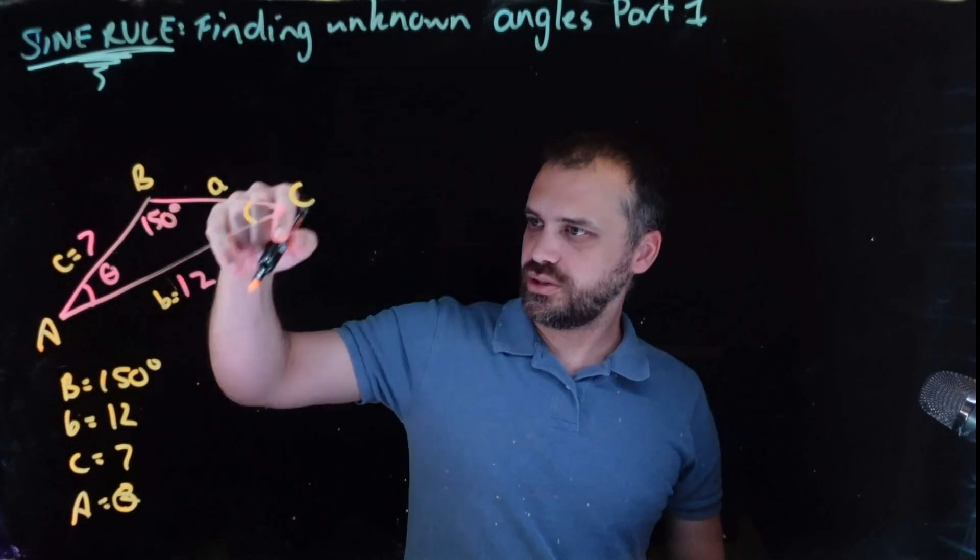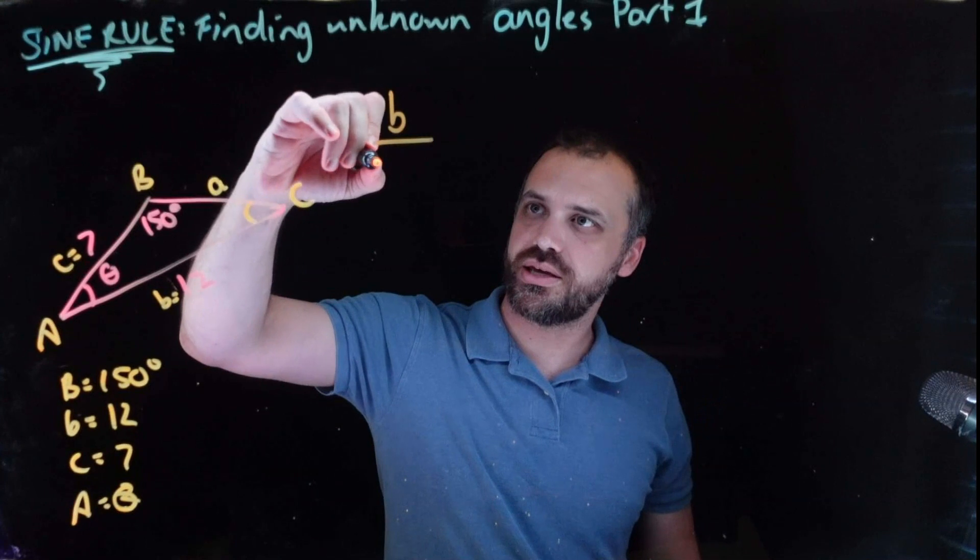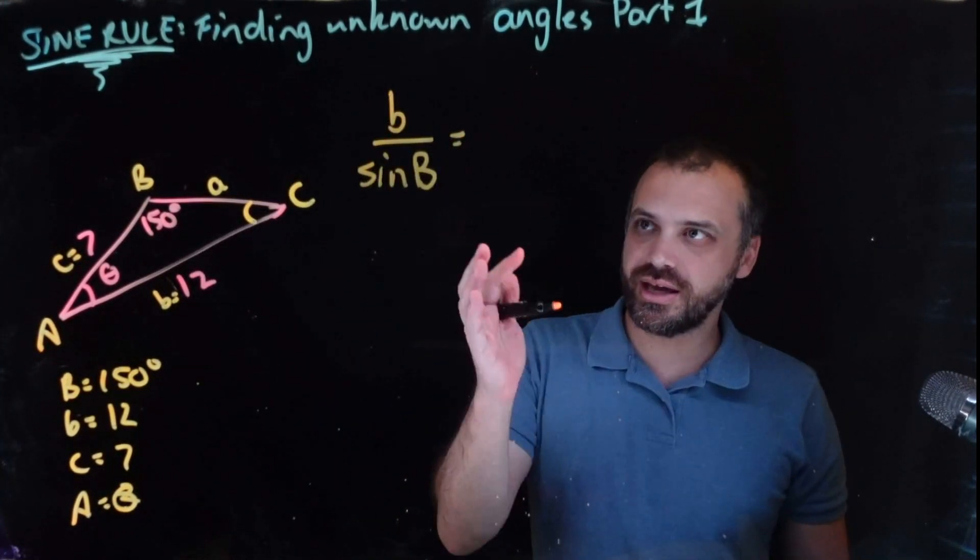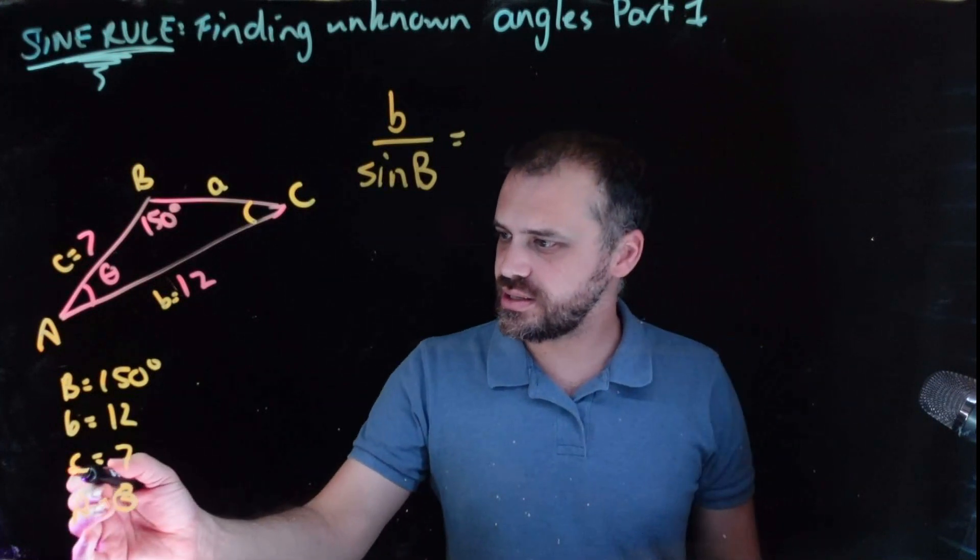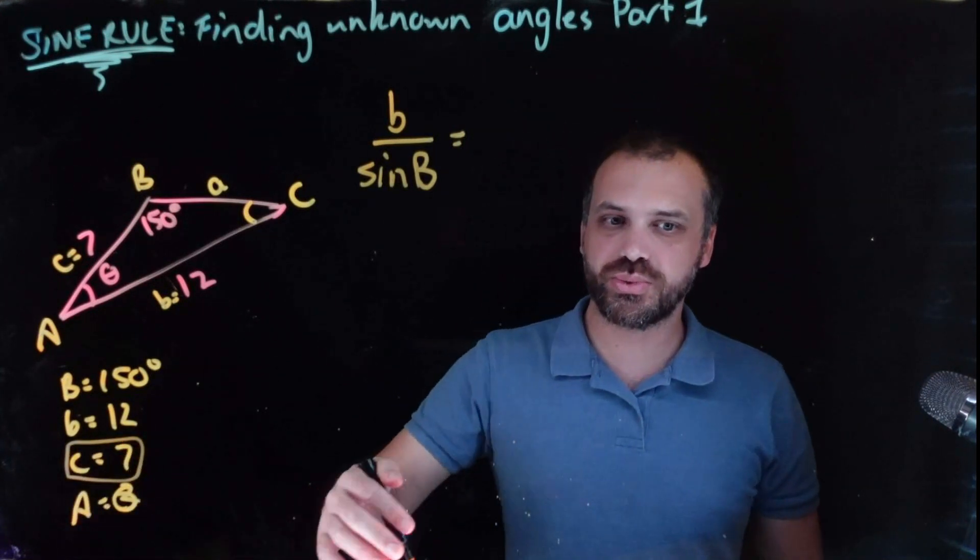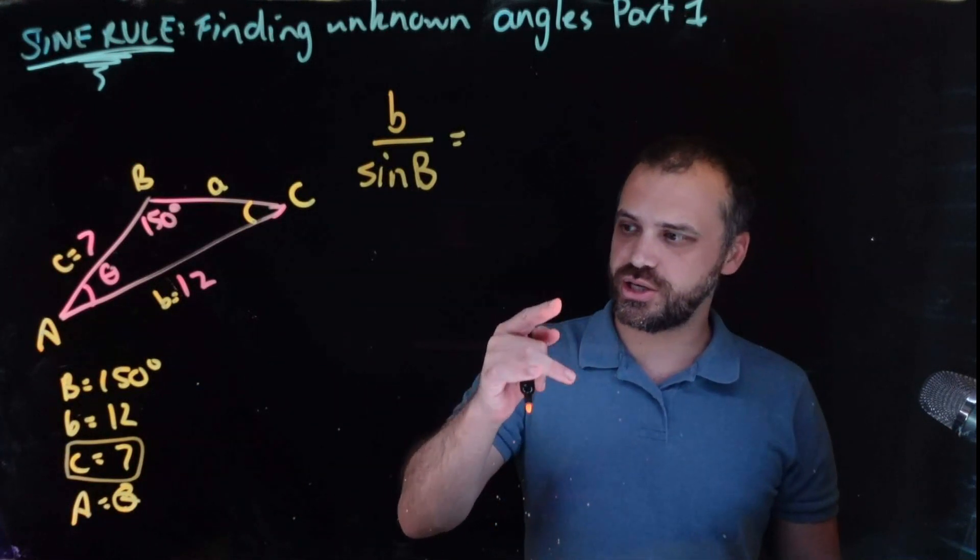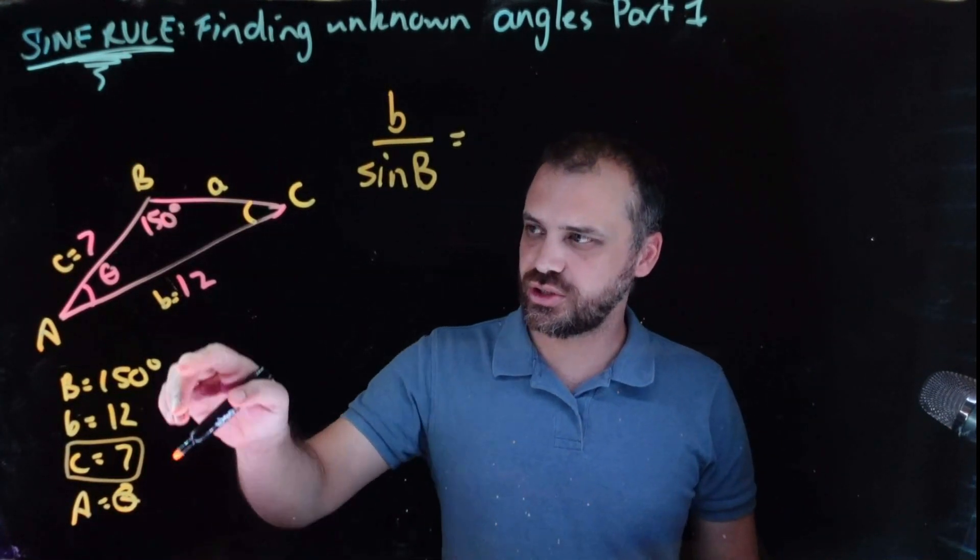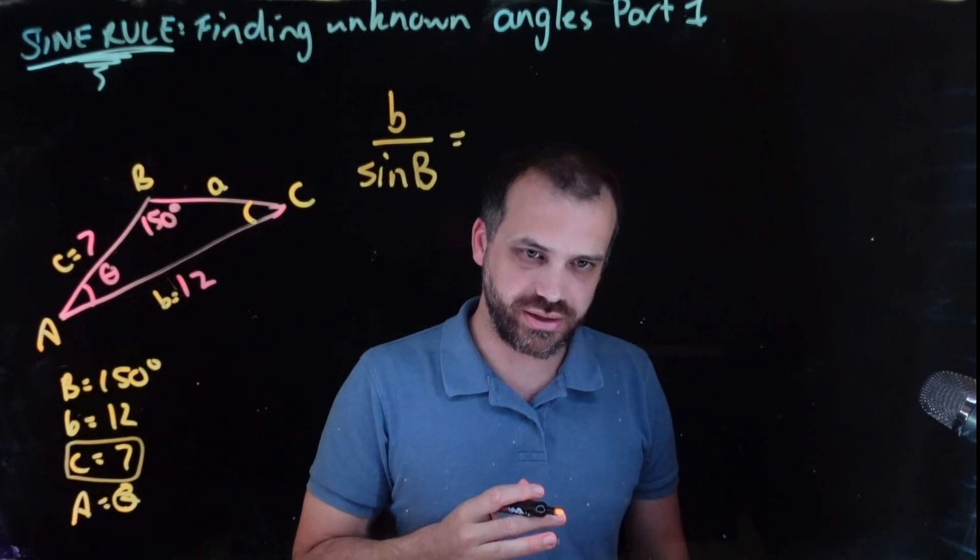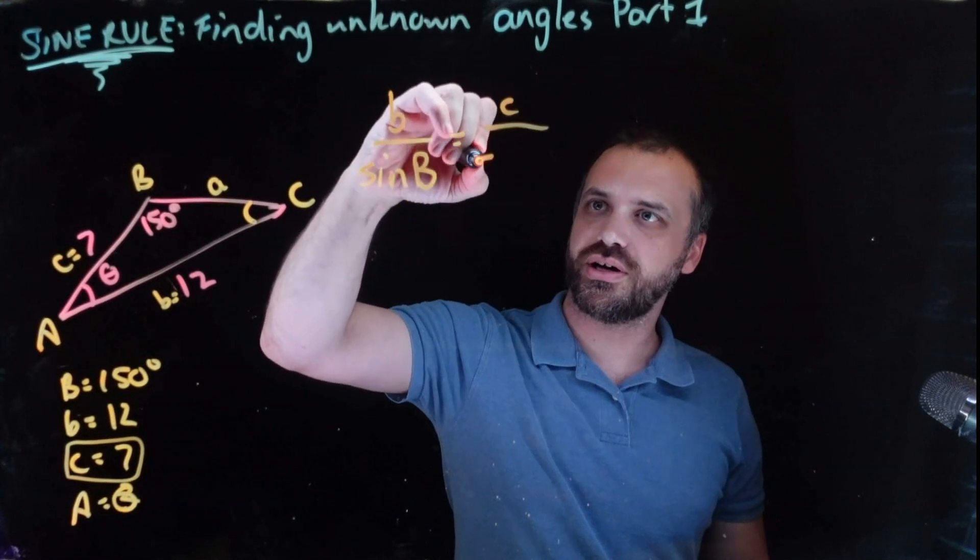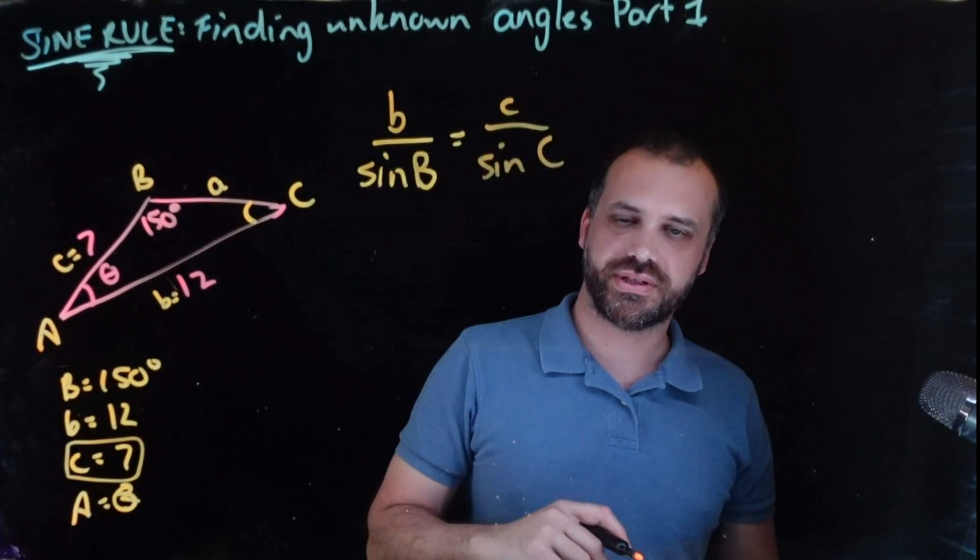So we need to do the length, so lowercase B over sine B equals, and the other one that we choose is this C, right? Because we know that C equals 7, so we can put that into an equation. We'll worry about the thing that we actually want to know at the very end. So lowercase C over sine C.